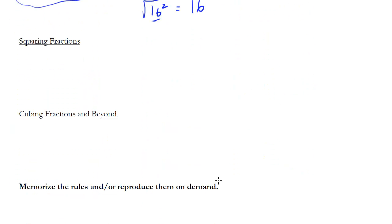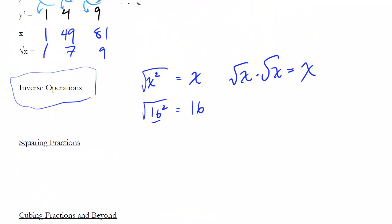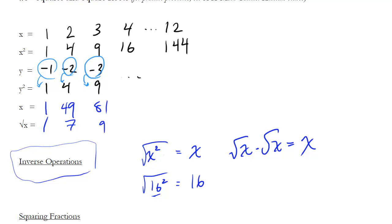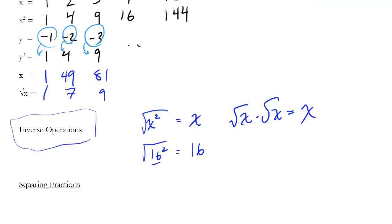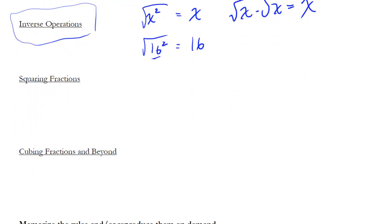The SAT likes to ask questions about squaring fractions because things get very strange when we square fractions. Notice that when we square integers, we just got numbers bigger than the original, which made sense. Things get a little bit weird when you square a fraction. So what if I square one half? If I square one half, I get one quarter — and notice that one quarter is less than one half.